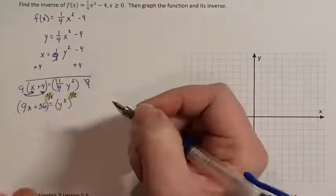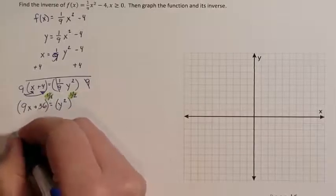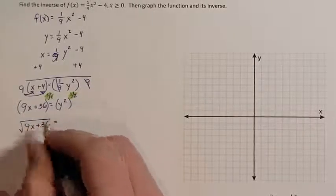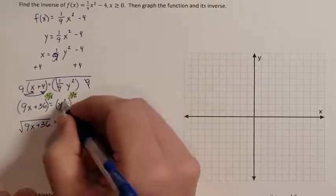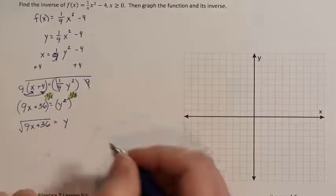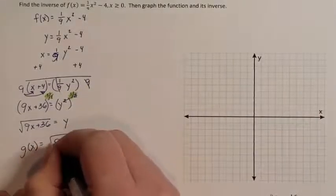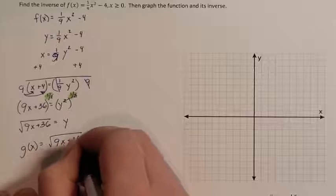2 times 1 half gives me a 1. So I'm raising both sides to the 1 half. Raising to the 1 half is the same thing as taking the square root. So I'm taking the square root of that 9x plus 36. 2 times 1 half is 1. So they cancel each other out and I'm left with y. So my inverse is g of x equals the square root of 9x plus 36.